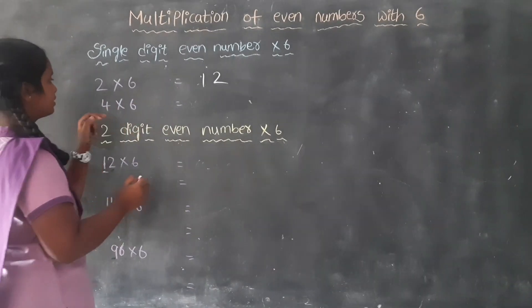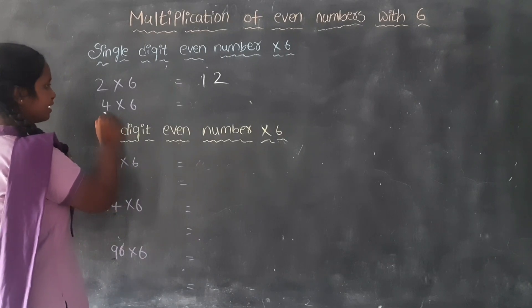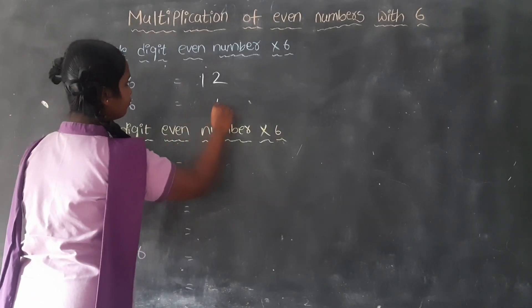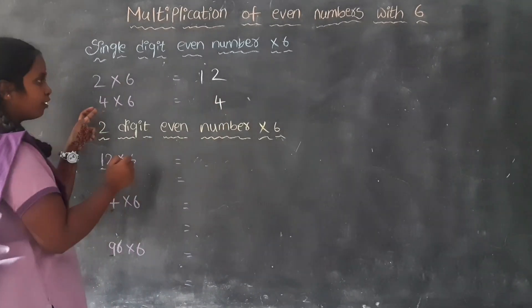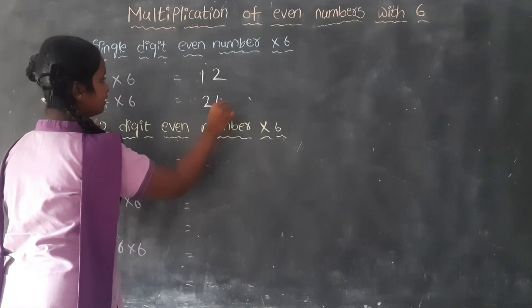Now we will see 4 times 6. What is the unit place here? 4. What is the half of 4? 2. The answer is 24.